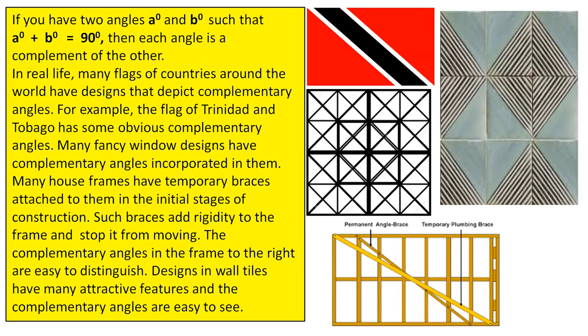Many fancy window designs have complementary angles incorporated in them. Many house frames have temporary braces attached to them in the initial stages of construction. Such braces add rigidity to the frame and stop it from moving. The complementary angles in the frame to the right are easy to distinguish.